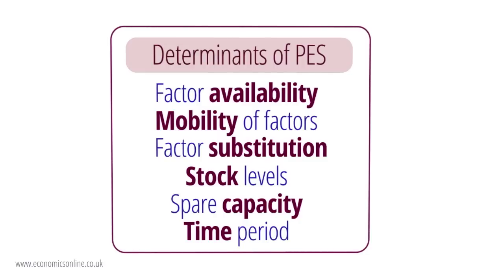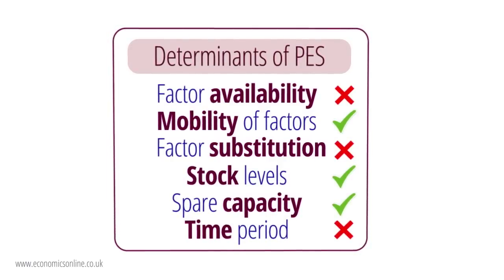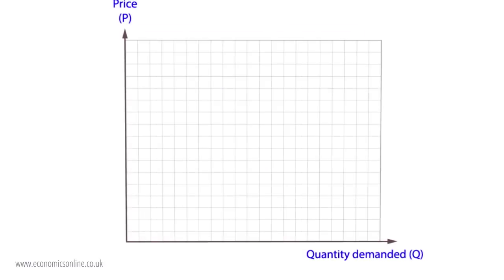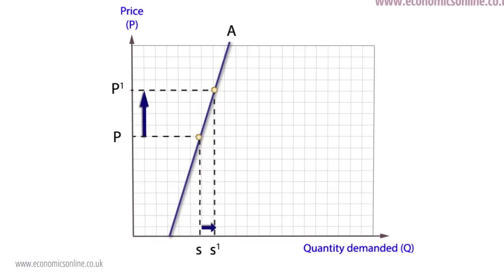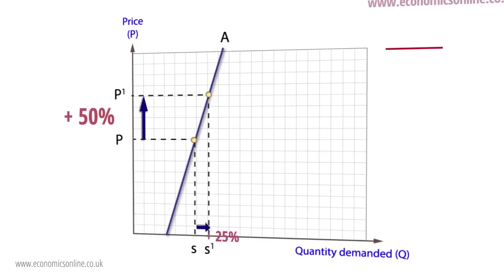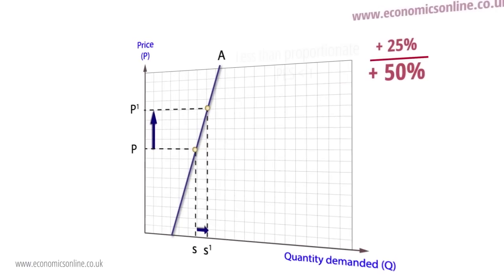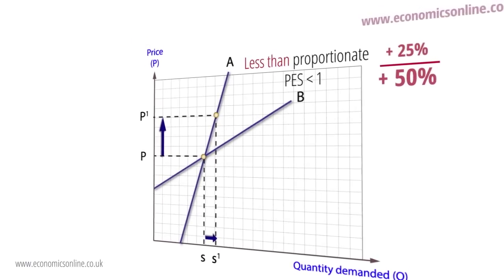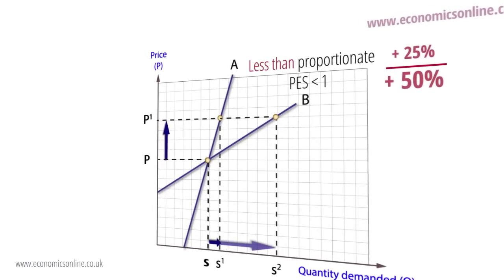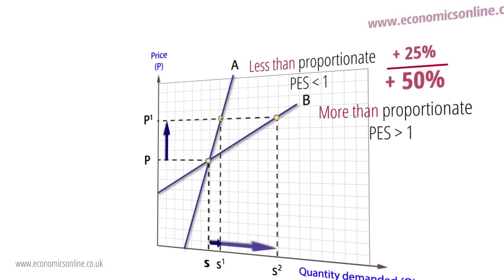PES can vary considerably depending on how many of these criteria are met. PES can be shown graphically with the help of a supply curve. The gradient of supply curve A is steep, indicating a low PES, where quantity supplied increases by a smaller percentage than the initial price increase from P to P1. In contrast, supply curve B is flat, indicating that the firm is able to respond to changes in market price and PES is greater than 1.